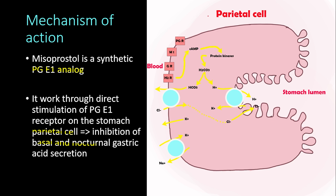On this picture we have the parietal cell, which has many receptors including the prostaglandin receptors, the muscarinic receptors, the gastrin receptors, and the histamine H2 receptors. The muscarinic, gastrin, and histamine H2 receptors all work to increase cyclic AMP, which increases hydrogen secretion into the stomach and raises hydrochloric acid levels.